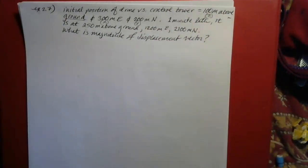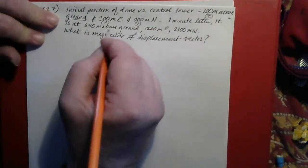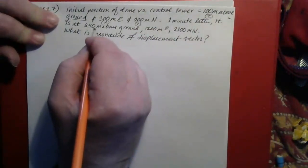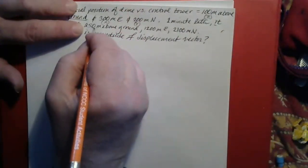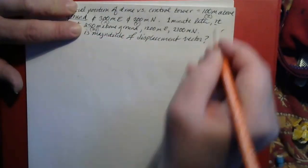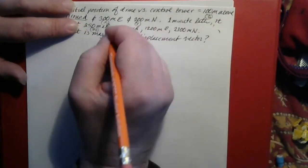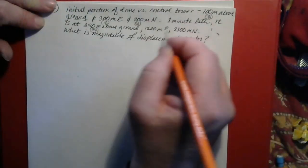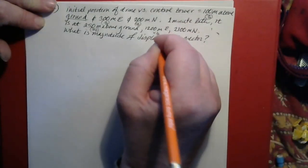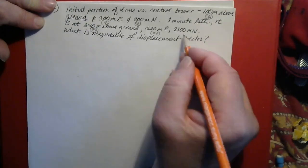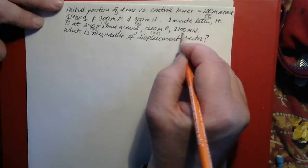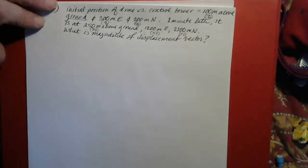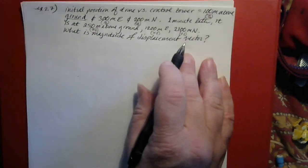One minute later the drone is at a different position: 250 meters above ground — that's the new z-final. 1,200 meters east — that's x-final. And 2,100 meters north — that's y-final. The question asks for the magnitude of the displacement vector.